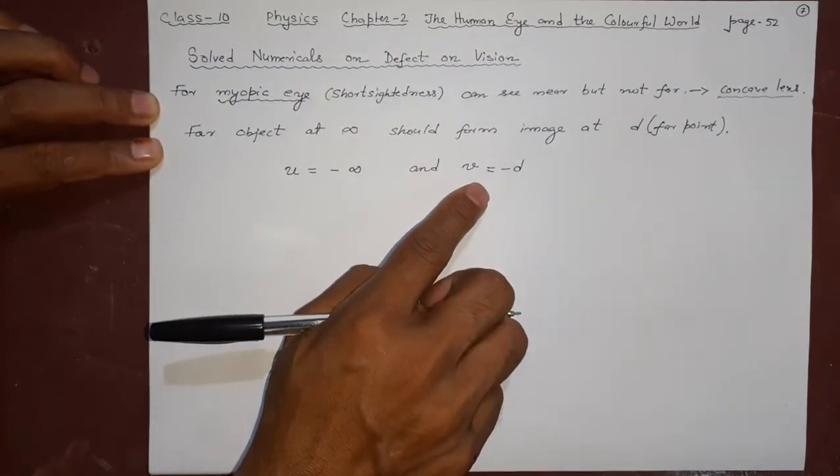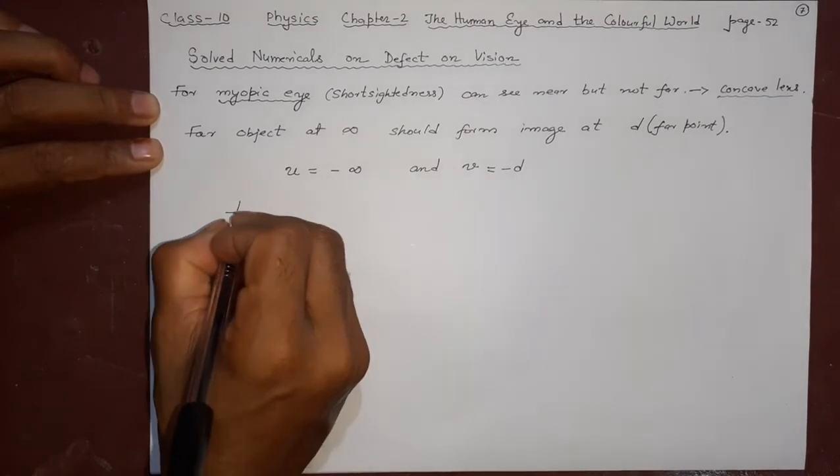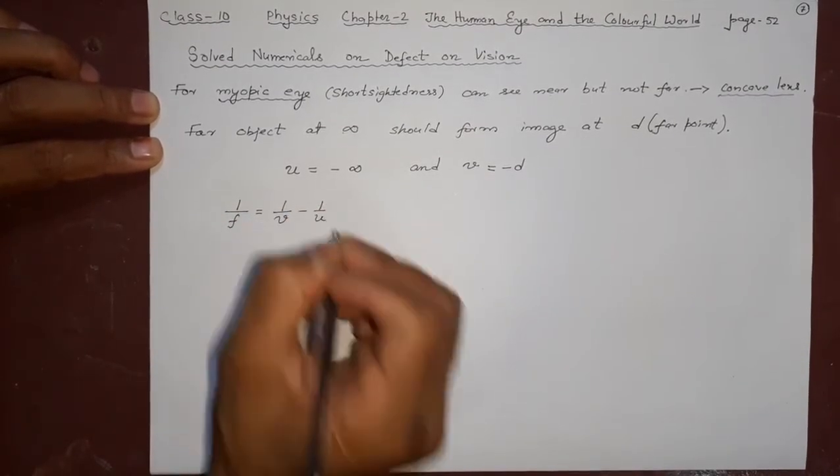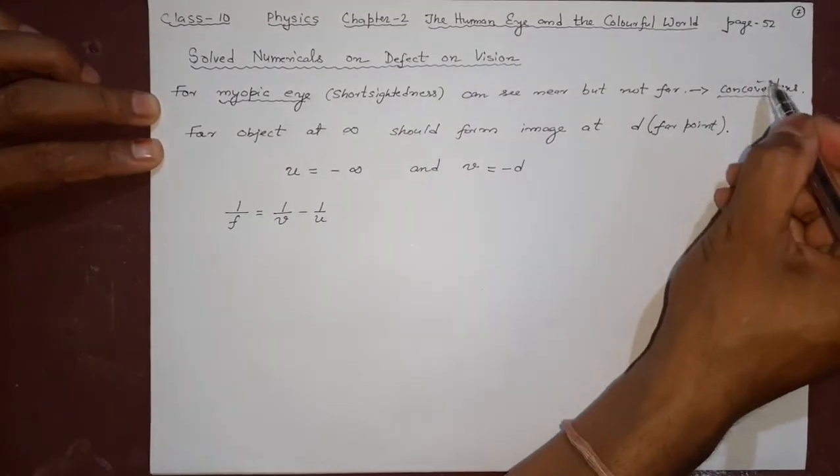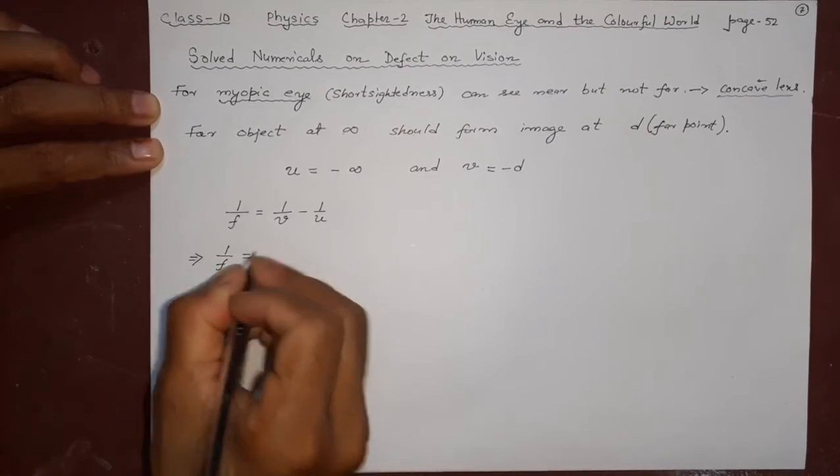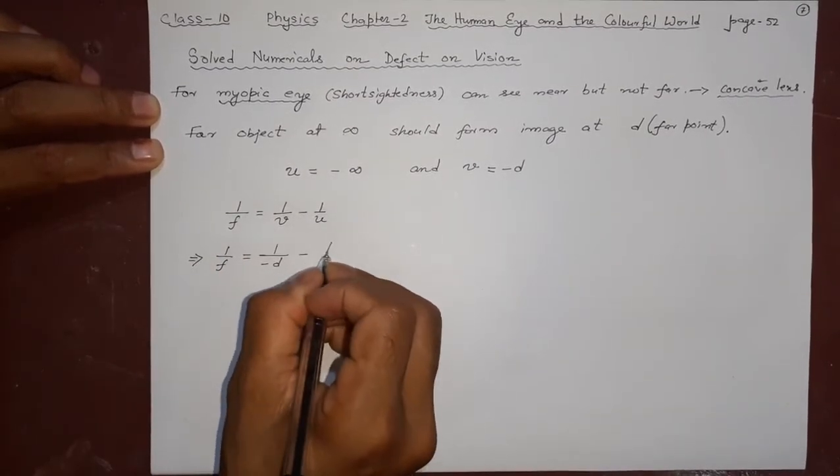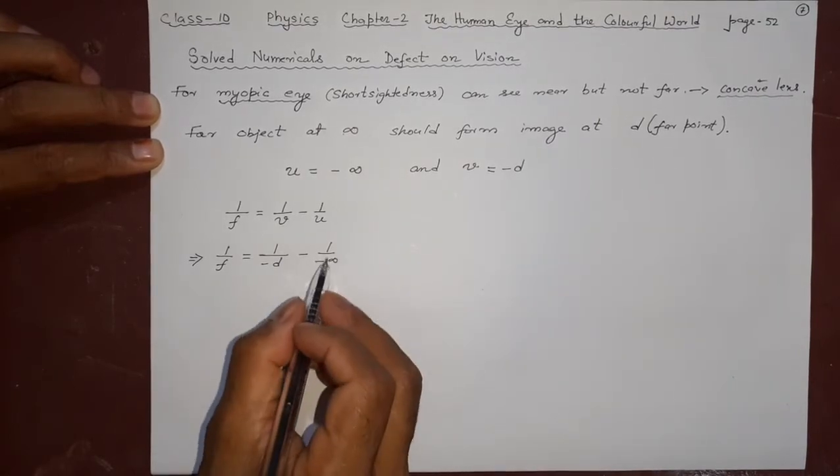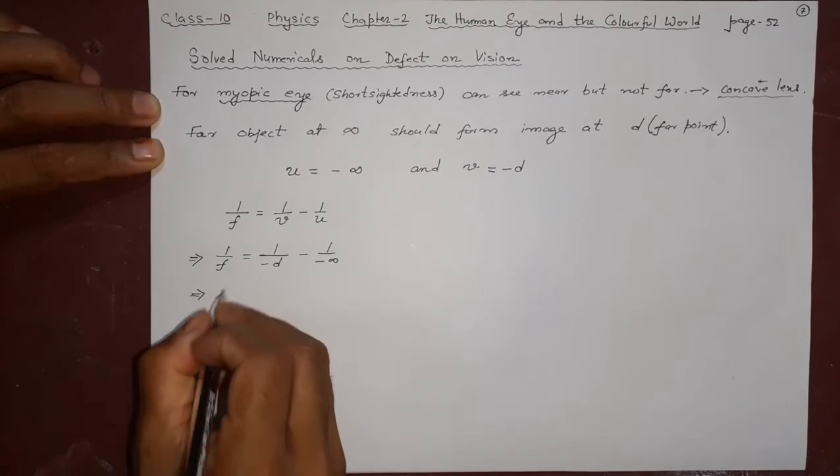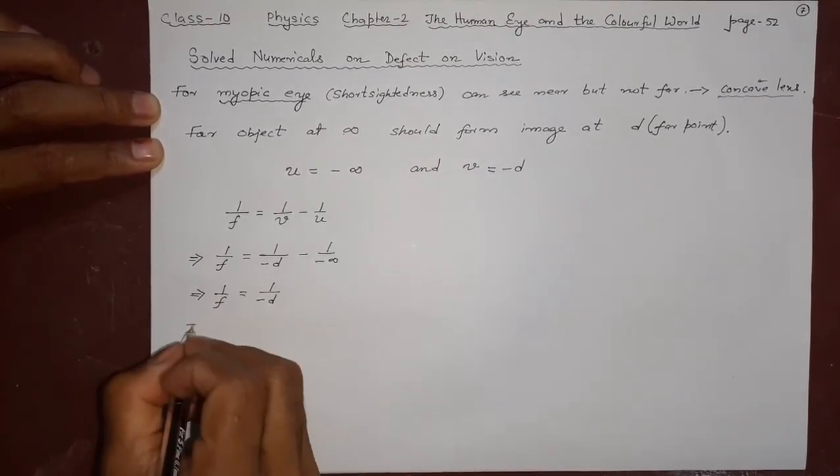After this, I'll use the lens formula: 1/f = 1/v - 1/u. Why this? Because we are using concave lens. From here I will try to find f. 1/v is 1/(-d), minus 1/(-infinity). Anything divided by infinity is zero, so this part is zero. What I get is 1/f = 1/(-d).